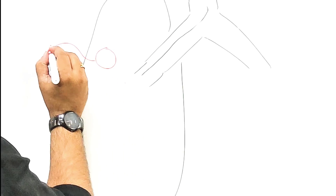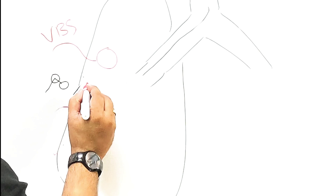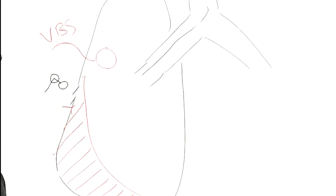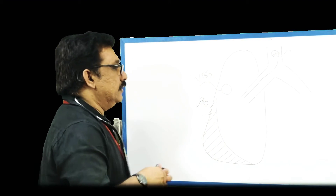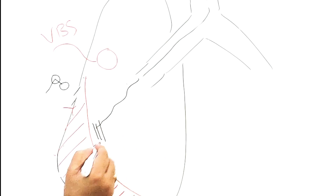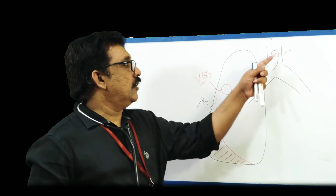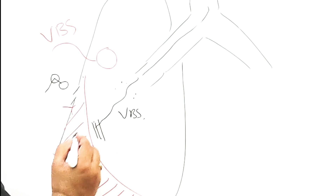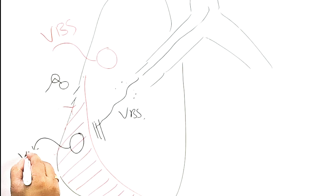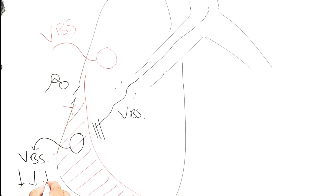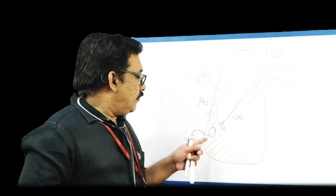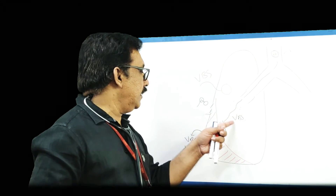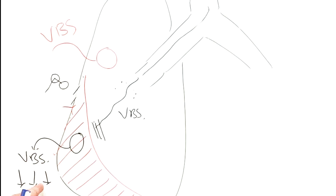When auscultating a normal lung you get a vesicular breath sound. Now if the patient develops pleural effusion - that means fluid collection between parietal and visceral pleura - the sound coming from the throat reaches here and is blocked, because water is a very bad conductor of sound. So the sound produced here as bronchial breath sound would normally become vesicular breath sound through normal lung tissue, but that sound is not fully transmitted. When you auscultate, you will get a vesicular breath sound, but it will be diminished. So diminished breath sounds are classically seen in pleural effusion.